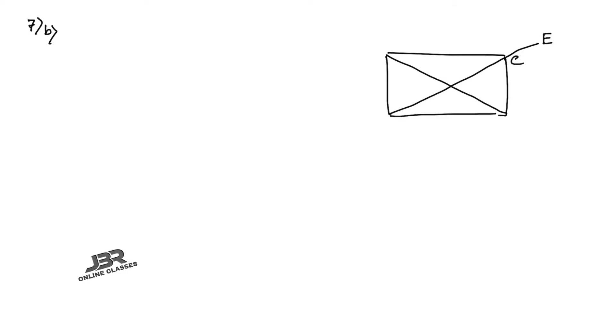Next, sum 7b. Draw the figure: a rectangle ABCD with diagonals intersecting at O, and diagonal AC extended to E. The angle ECD is given as 146°. ABCD is a rectangle, the diagonal intersects at O, AC is produced to E. Find the angles of triangle AOB.